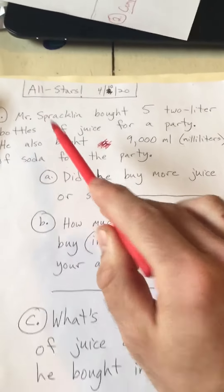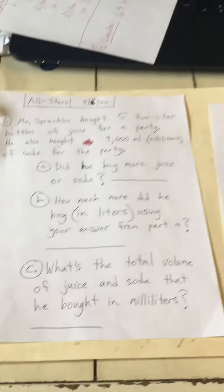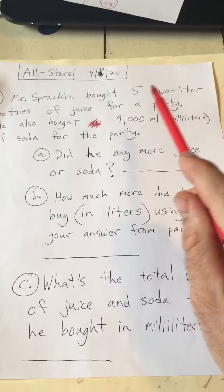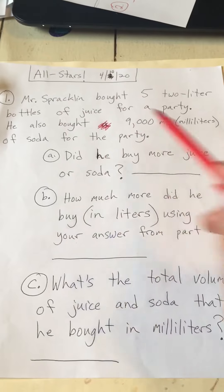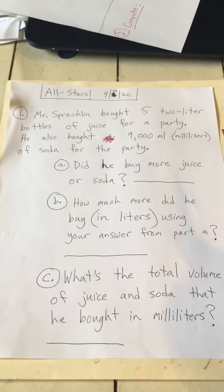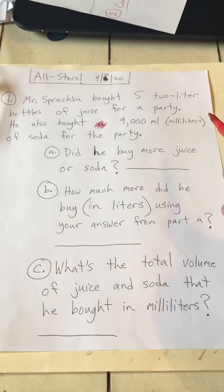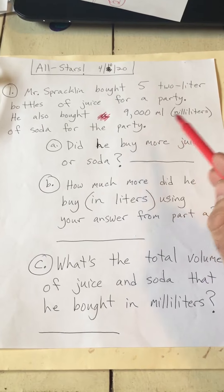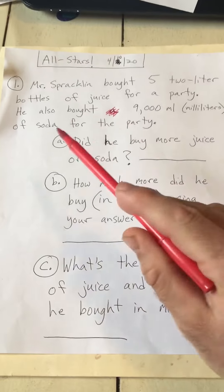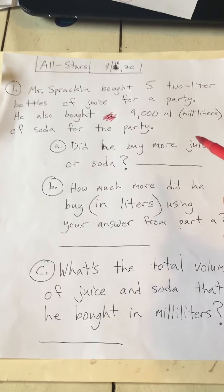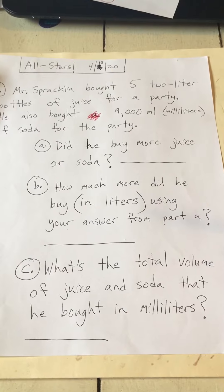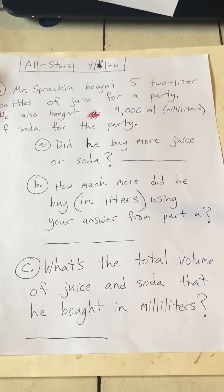Here we go — number one has parts A, B, and C. Mr. Spracklin bought five two-liter bottles of juice for a party. He also bought 9,000 milliliters of soda for the party. Did he buy more juice or soda? So we're going to compare the juice to the soda.